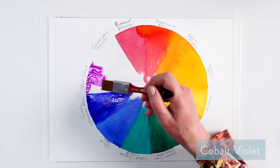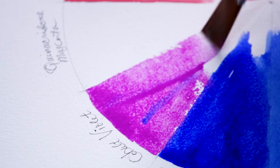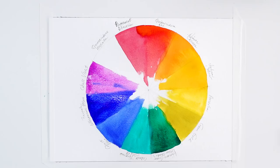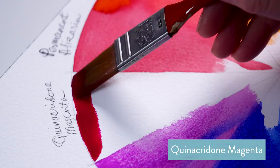Moving towards our red, we have the cool red called quinacridone magenta. Again, one of those more modern pigments called quinacridone that give us beautiful color, transparency, and permanence.